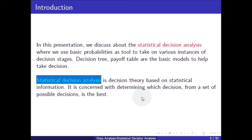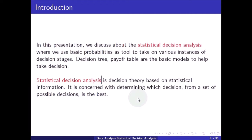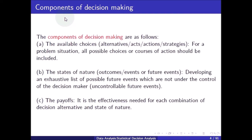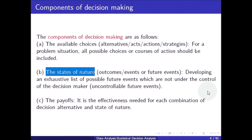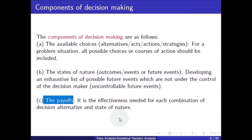Statistical decision analysis is a decision theory based on statistical information. It is concerned with determining which decision, from a set of possible alternatives, is the best. The components of decision making are: the available choices, also called alternatives, acts, actions, or strategies; and the states of nature, also called outcomes or future events — an exhaustive list of possible future events not under the control of the decision maker.